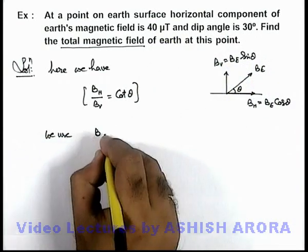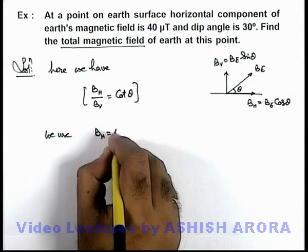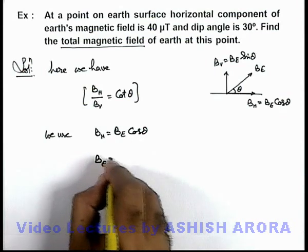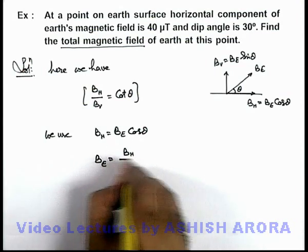Here we use B_H equals B_E cos theta. So in this situation, the total magnetic field B_E we can write as B_H divided by cos theta.